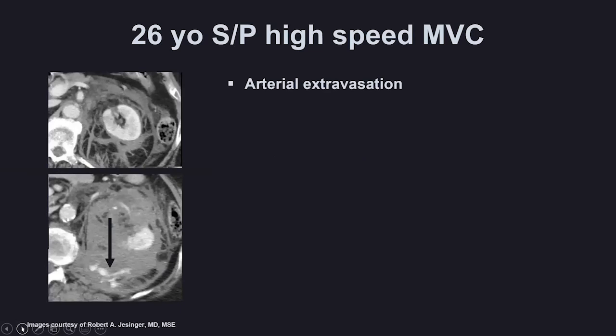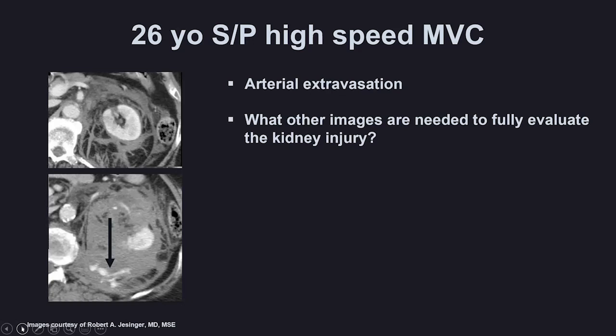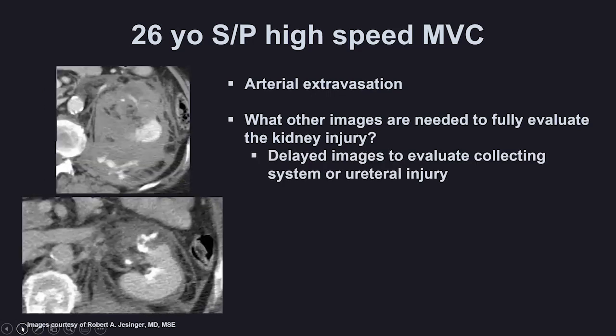Case seven: a 26-year-old with a high-speed motor vehicle collision showing arterial extravasation on the lower image. To fully evaluate the kidney injury, delayed images are needed to evaluate the collecting system. With a renal arterial injury, patients can have more than one injury to the kidney. In this case, there was also a collecting system injury on the same side, which can change how these patients are managed.